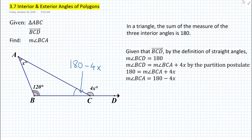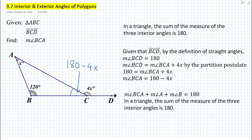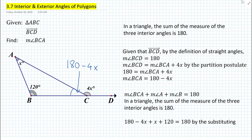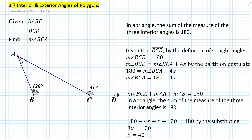Now that we have all the interior angles of triangle ABC, let's add them all up and set them equal to 180 and solve for the value of x. So we can say that the measure of angle BCA plus measure of angle A plus measure of angle B is equal to 180, because in a triangle, the sum of the measures of the three interior angles is 180. Now we substitute, and we obtain 180 minus 4x plus x plus 120 is equal to 180. And if we solve for the value of x, we get 40.